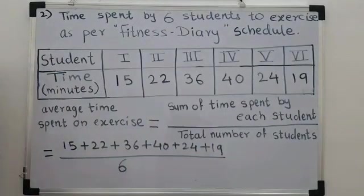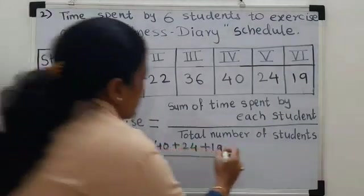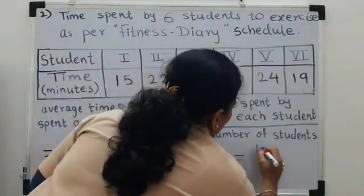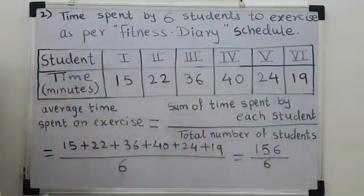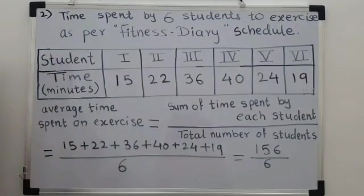So, upon 6. If I add all these numbers, I get 156 and this upon 6 as it is. If I solve this division, I get 26 minutes as the answer of average time.